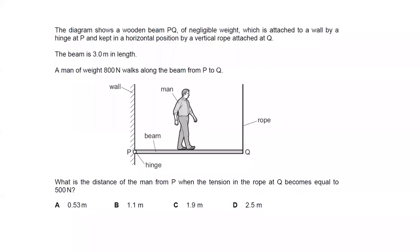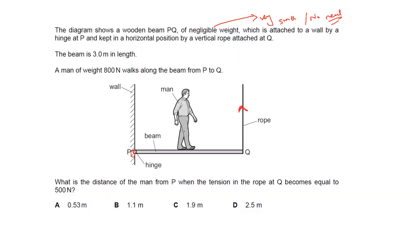Next question: a wooden beam of negligible weight is attached to a wall by a hinge and kept horizontal by a vertical rope. A man of weight 800 newtons walks along the beam from P to Q. The length of the beam is 3 meters. We need to find the distance of the man from P when the tension in the rope becomes 500 newtons.